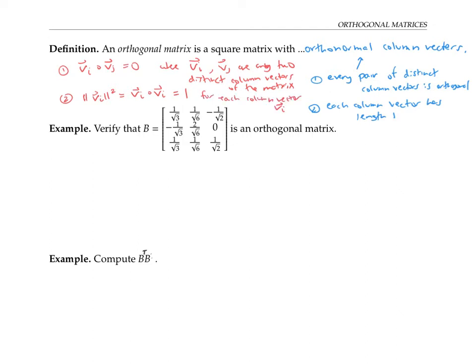Let's verify that matrix B is an orthogonal matrix. First, we need to check that each pair of column vectors is orthogonal. I'll name the columns C1, C2, and C3. We need to check that C1 dotted with C2 is zero, that C1 dotted with C3 is zero, and that C2 dotted with C3 is zero.